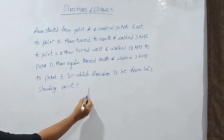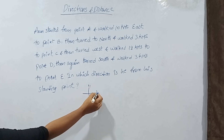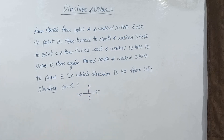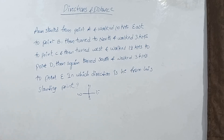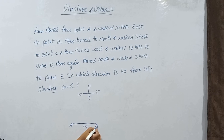We have directions: South, East, West. Now the question: Arun started from point A and walked 10 kilometers east to point B. Starting from A point, going east towards 10 km, this point B is 10 km away.